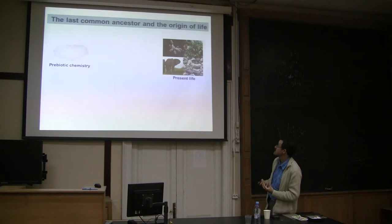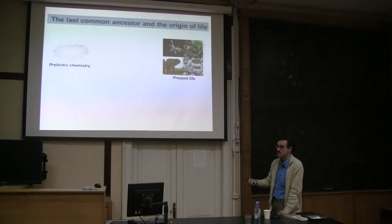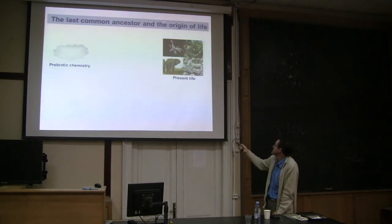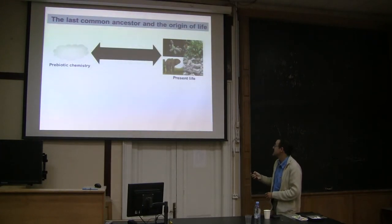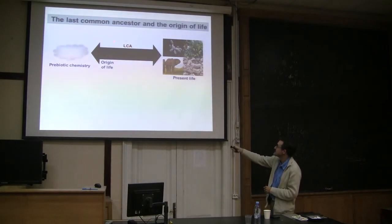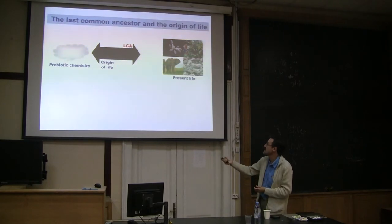Characterizing the last common ancestor also has implications for the study of the origin of life. The origin of life is something that happened between prebiotic chemistry — before life existed — and present life today. These are two extremely different things: one relatively simple, the other already extremely complex, with a huge gap between the two. If we are able to characterize how the last common ancestor was, maybe it was somewhere closer to prebiotic chemistry, making this gap smaller and helping to better explain how life may have originated.